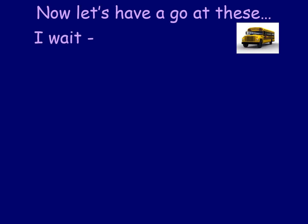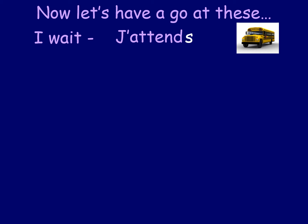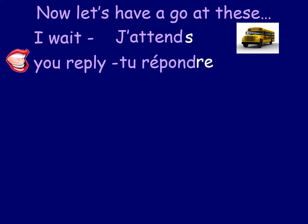Let's try some examples. 'I wait' — maybe you're waiting for the bus: start with 'j'' (we drop the A because two vowels come together) and 'attendre'. Drop the RE from the end and add S — 'j'attends' means I wait or I am waiting. Next, 'you reply': take 'tu' and 'répondre', drop the RE, add S — 'tu réponds' means you answer.